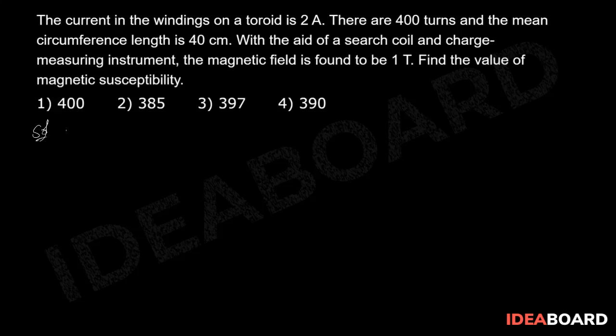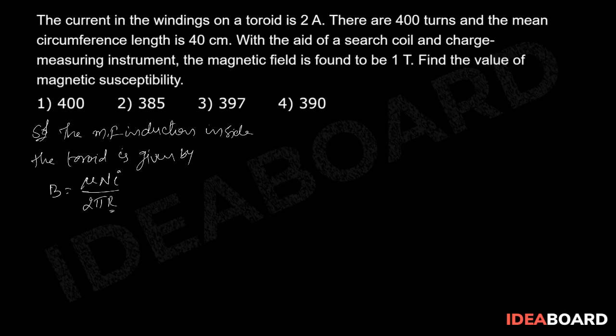Here the magnetic field induction inside the toroid is given by B equal to mu N I by 2 pi r, where r is the mean radius.